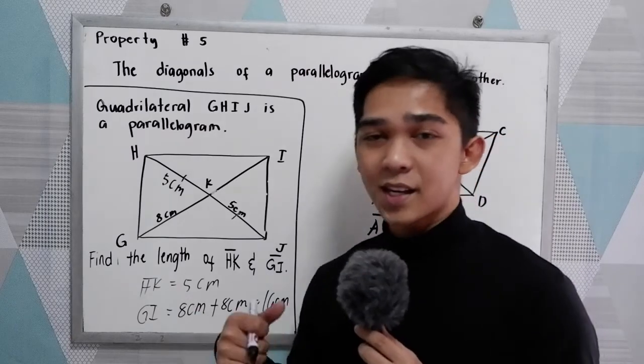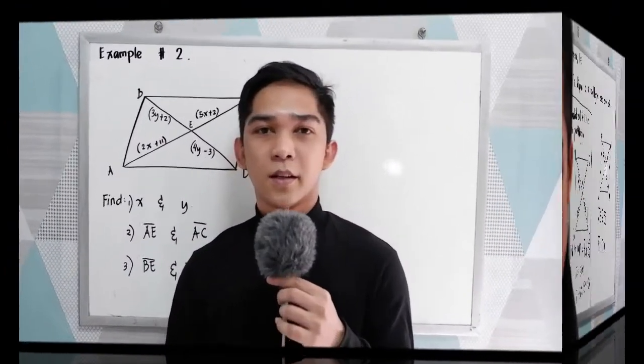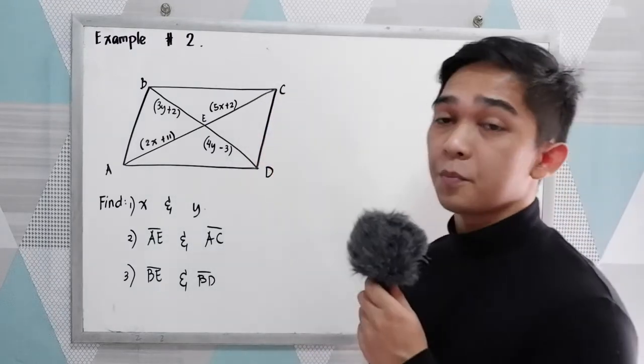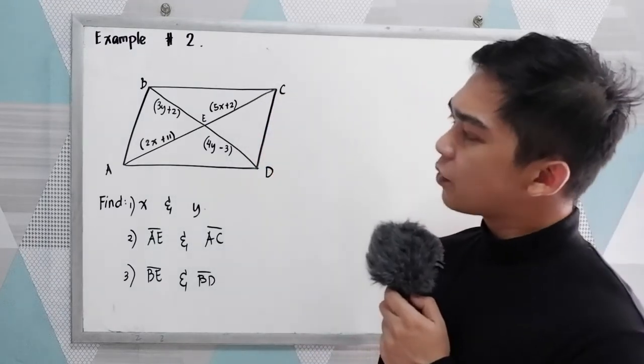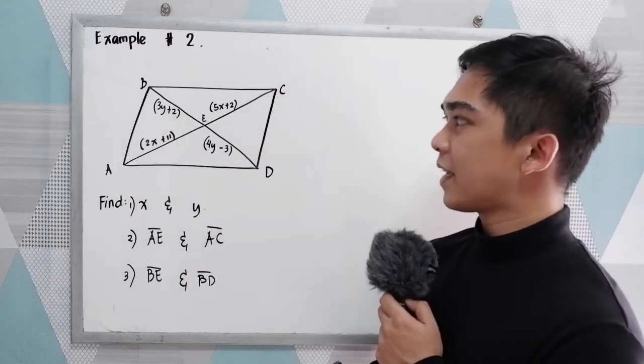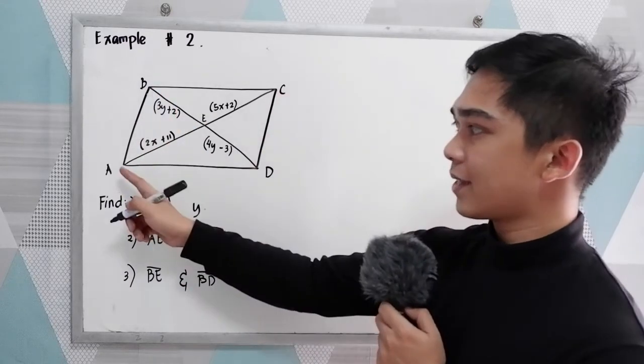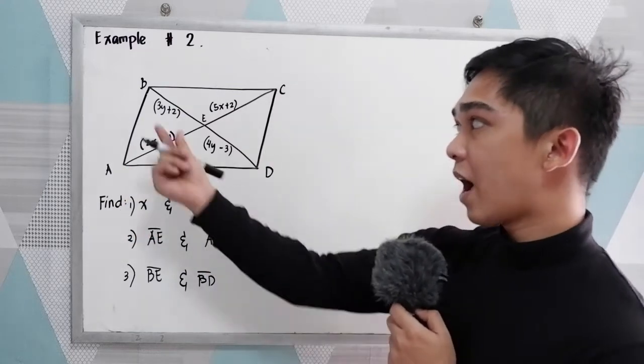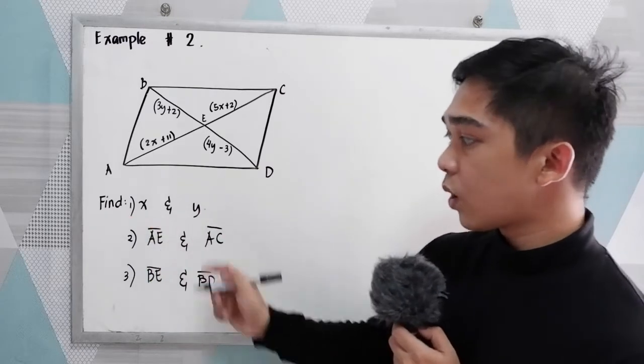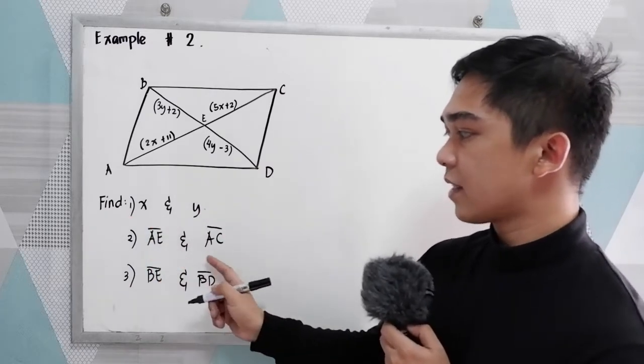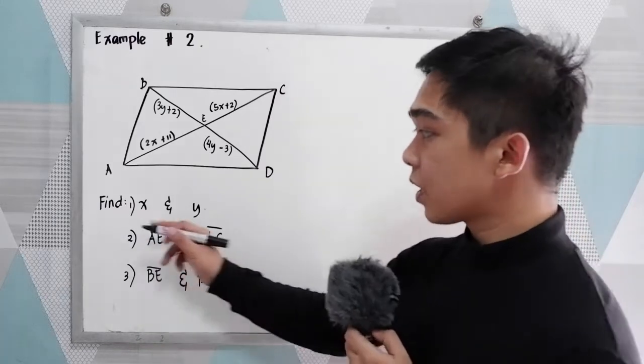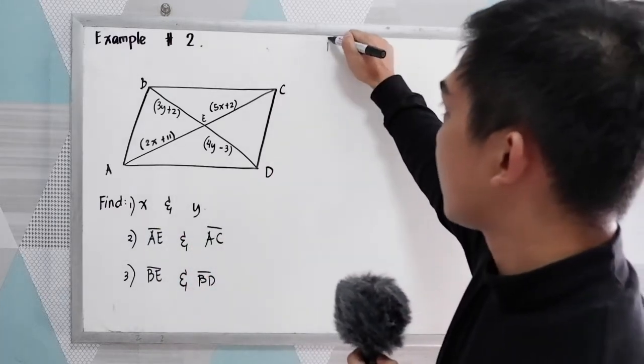Let's have our second example. Example number 2 under our fifth property. We have our given parallelogram ABCD and diagonals BD and AC, and we have the following measurements. We're going to find number 1, x and y; number 2, AE and AC; number 3, BE and BD. Let's start with number 1. We're going to find x and y.